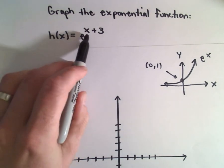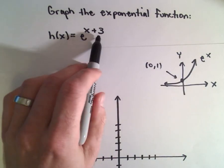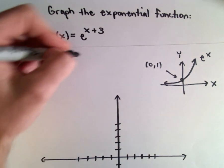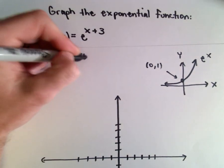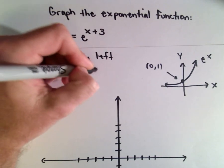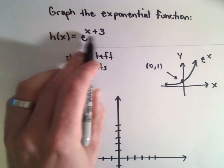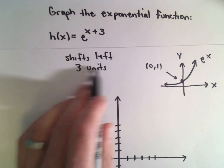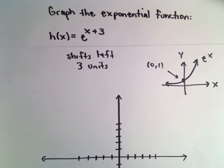Well, here we have replaced x with x plus 3. And what that does is it actually shifts the graph left 3 units. So be careful, even though you see positive 3, it goes in the negative direction, the left direction.